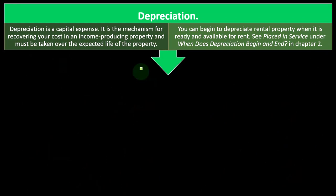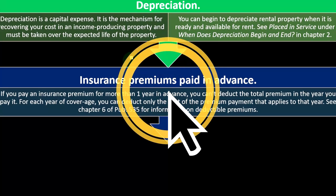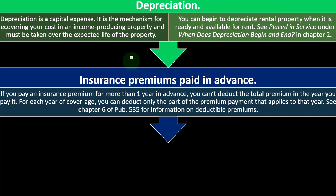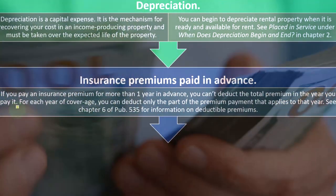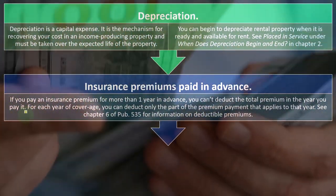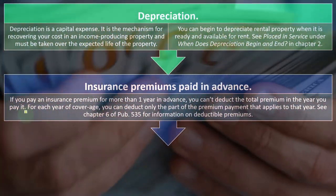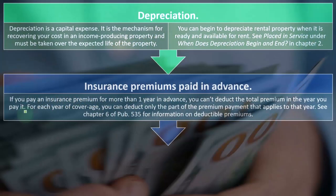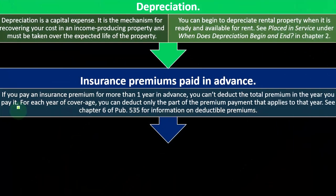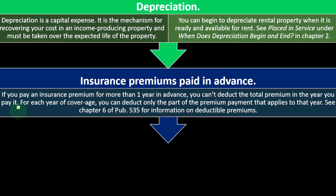You can begin depreciating rental property when it is ready and available for rent — see 'placed in service' under depreciation in chapter two. Regarding insurance premiums paid in advance: if you pay a premium for more than one year in advance, you can't deduct the total premium in the year you pay it. The IRS is skeptical of using a cash-based system to take more expense up front via prepayment. For each year of coverage, you can deduct only the part of the premium that applies to that year — an accrual-type concept.